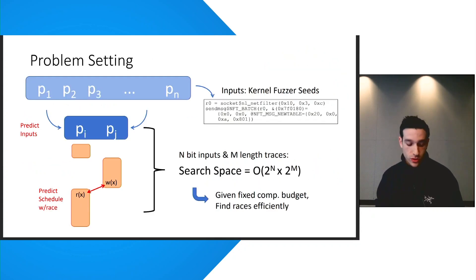So now, hopefully I've convinced you that unintended data races in the Linux kernel are something that's worth testing for. Now, I'll define our problem setting for testing for data races a bit more precisely.